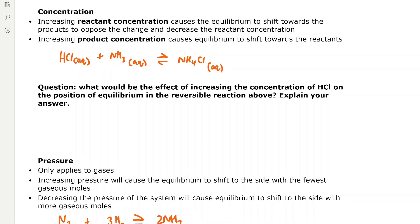Changes in concentration: increasing the reactant concentration causes the equilibrium to shift towards the products to oppose the change and decrease the reactant concentration. Increasing product concentration causes the equilibrium to shift towards the reactants. For example, in HCl(aq) + NH3 → ammonium chloride, increasing the concentration of HCl, which is a reactant, will shift the equilibrium to the right towards the products, opposing the change by increasing product concentration and decreasing reactant concentration.